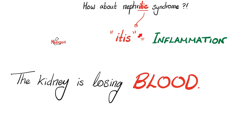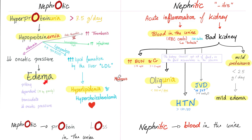Nephritic syndrome, on the other hand, has itis — meaning inflammation. Your kidney is literally injured and bleeding. Nephrotic syndrome has four features: high protein in the urine, low protein in the blood, edema, and hyperlipidemia.